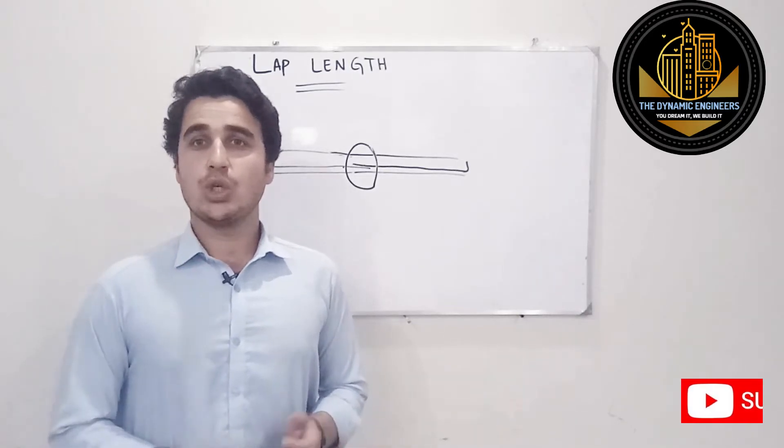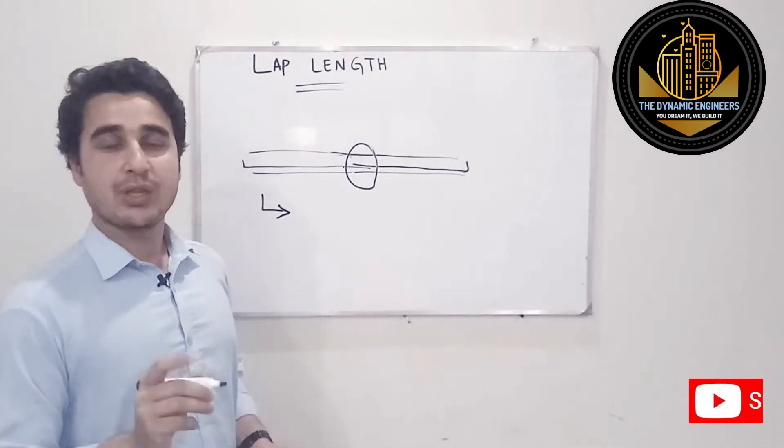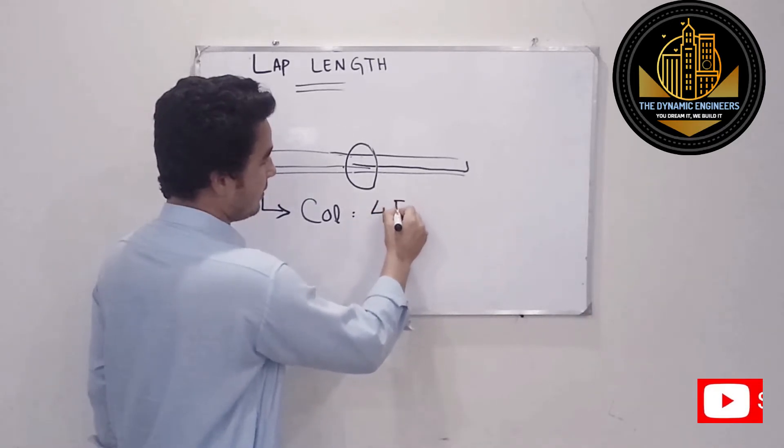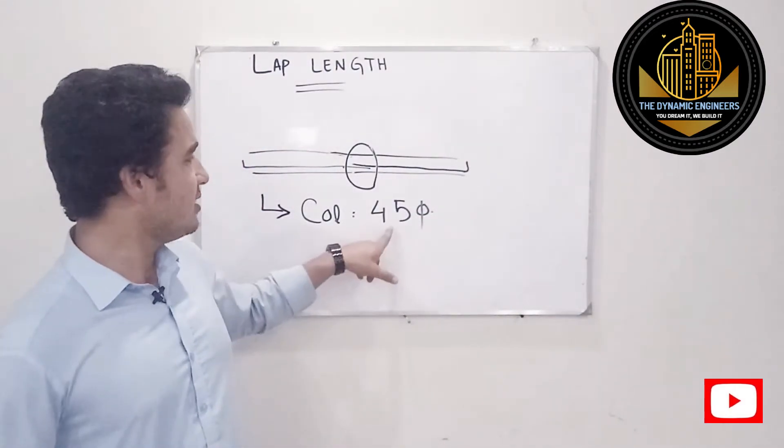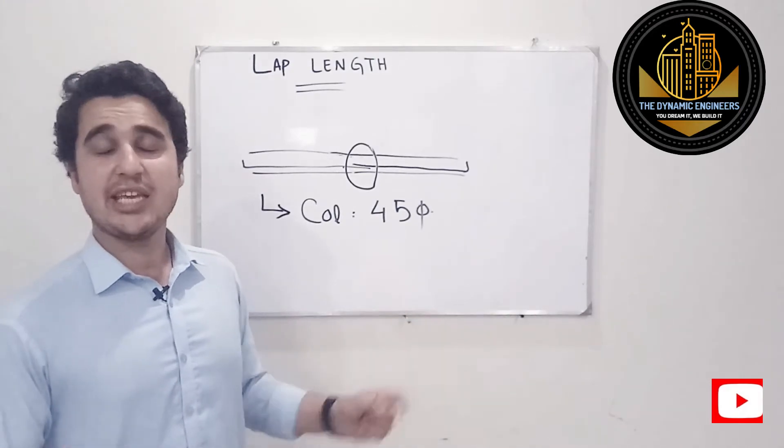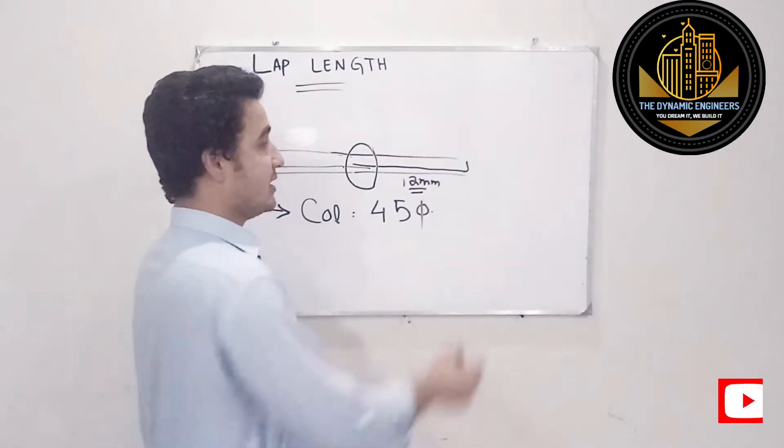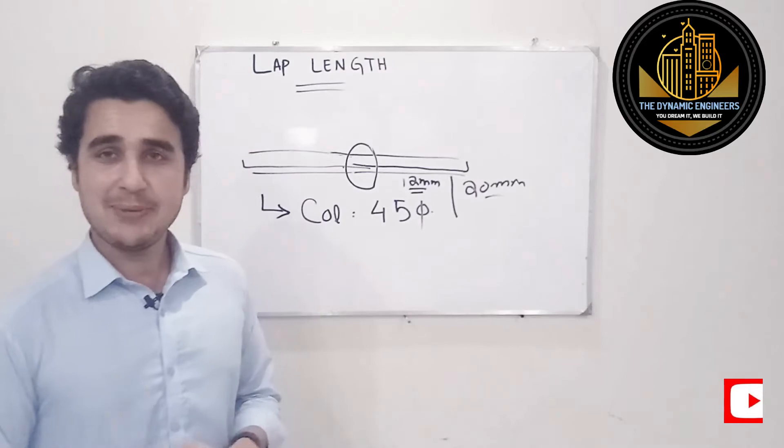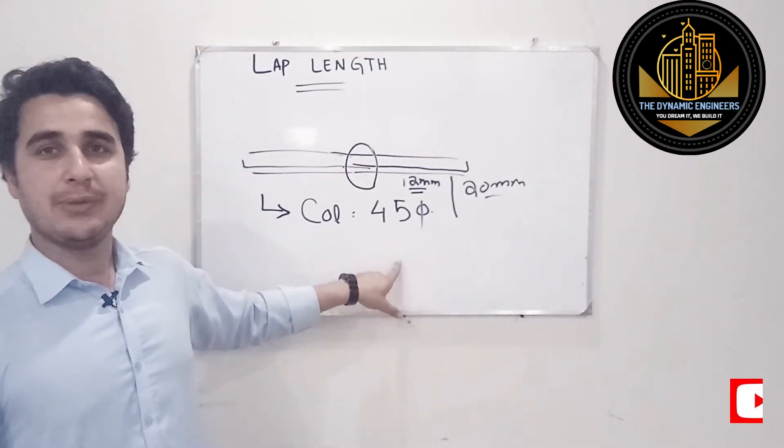What will be the value of lap length in beams and columns and slabs? So we will be talking about the thumb rules. The thumb rule for providing lap length is: the value of lap length in columns is 45D. This is the diameter of the bar. So this means that higher the diameter of the bar, longer will be the lap splice length. Like if you are using 12 millimeter bar, its lap length will be smaller than a bar of 20mm. Lap length is directly proportional to the diameter of the bar.